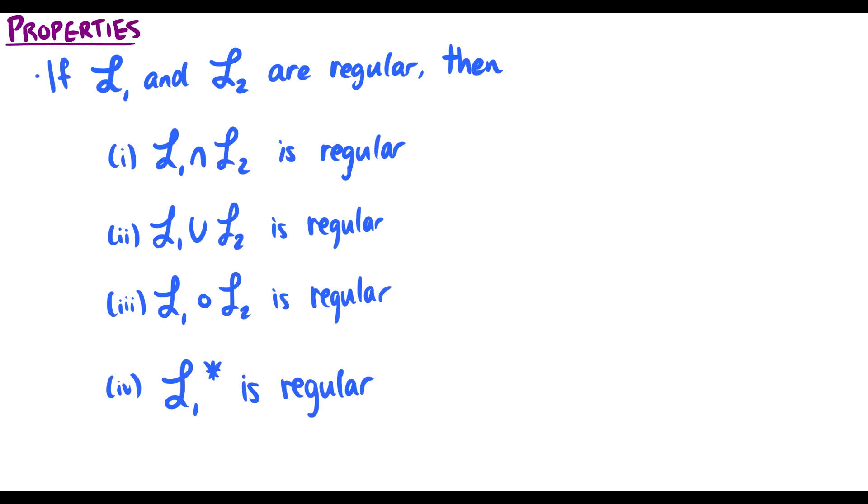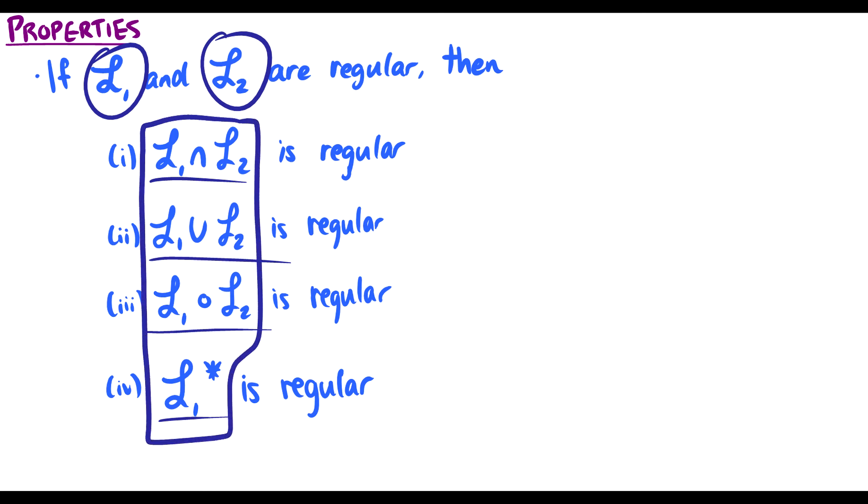We have some properties here. If L1 and L2 are regular, then the intersection is going to be regular, the union will be regular, the concatenation will be regular, and the star operator is regular. Which means that if you can draw a finite state machine for L1, and you can draw a finite state machine for L2, then you can combine the finite state machines in some way to produce all four of these combinations. And that will be gone over in the next video.